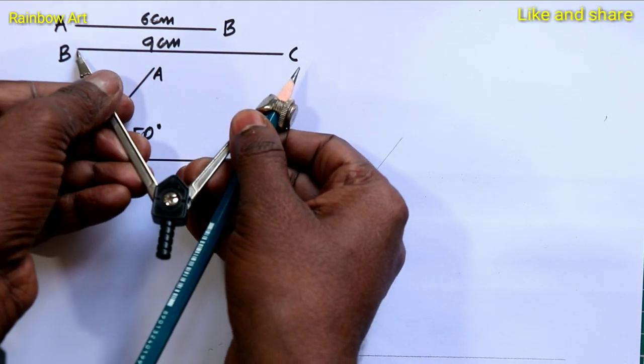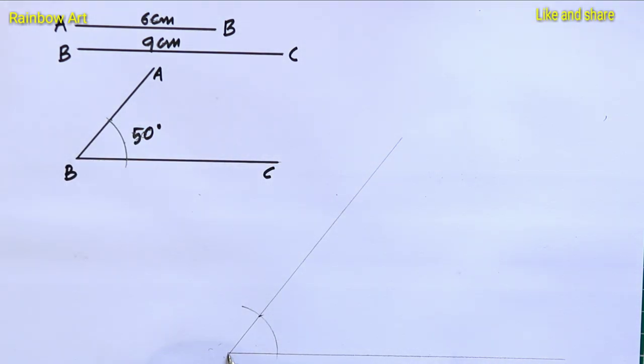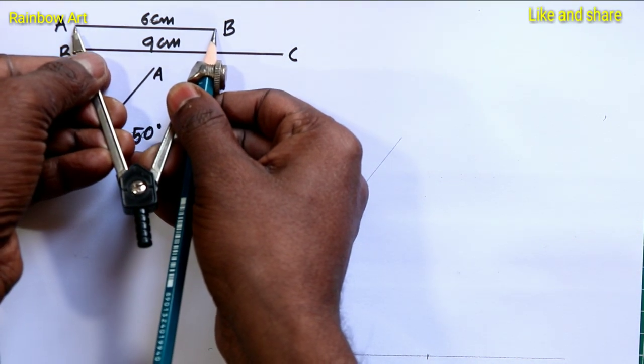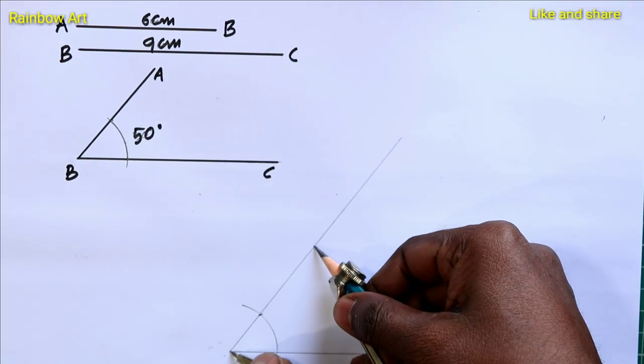Now, take the large side BC and cut from one side of the angle. And take another one and cut from another side. Just like this.